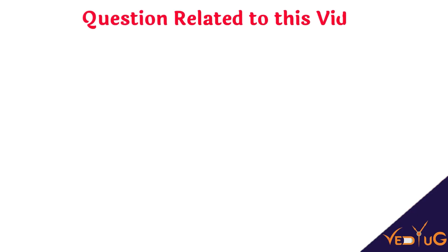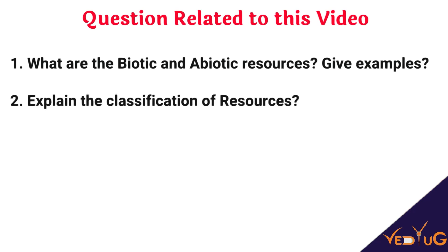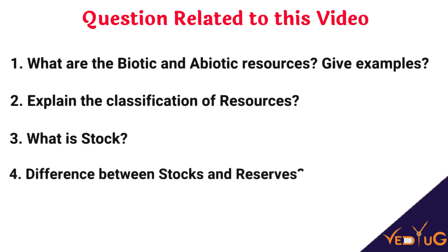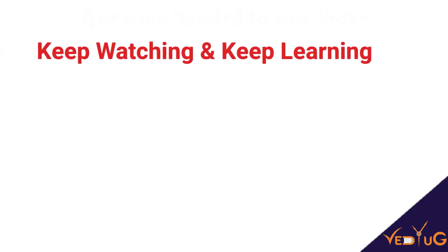In this way, we have seen what resources are and the various types of resources on the basis of exhaustibility, origin, ownership, and development. I hope you all understood this video. Based on this video, there are some questions which you have to solve with the help of your textbook. We will continue this lesson in our next video. Till then, keep watching and keep learning. Thank you.